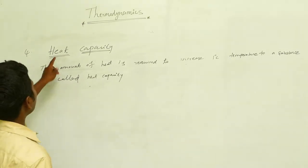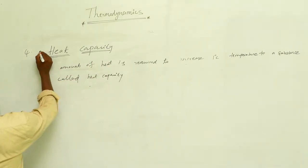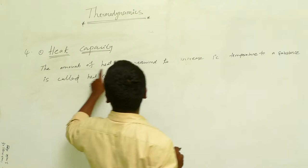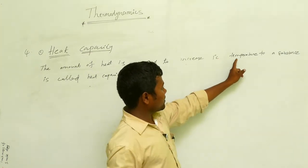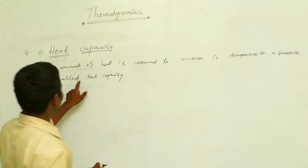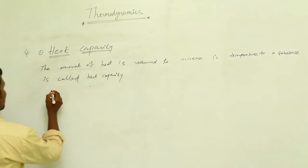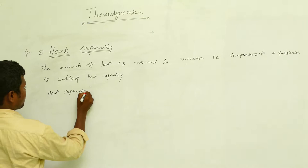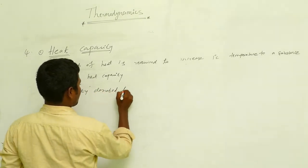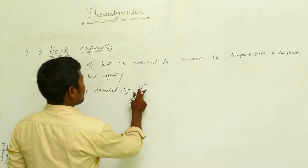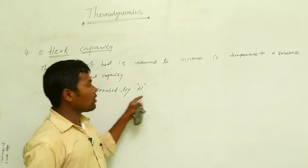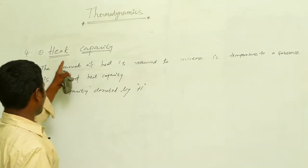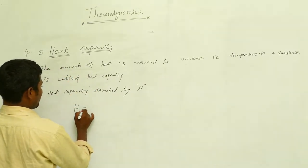The definition of heat capacity: the amount of heat required to increase the temperature of a substance by one degree is called heat capacity. Heat capacity is denoted by the capital letter H — since H is the first letter in 'heat capacity', we use that symbol.